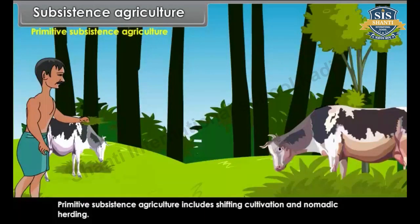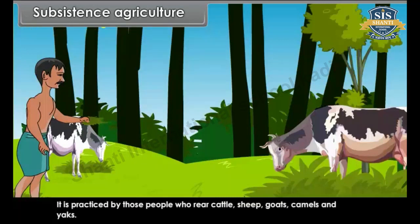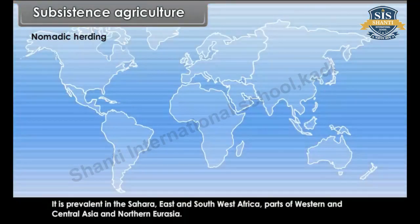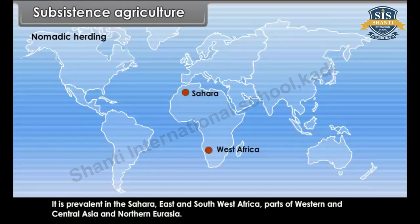Primitive subsistence agriculture includes shifting cultivation and nomadic herding. Nomadic herding is practiced by those people who rear cattle, sheep, goats, camels and yaks. These animals are dependent on the natural vegetation in the area. It is prevalent in the Sahara, East and Southwest Africa, parts of Western and Central Asia and Northern Eurasia.